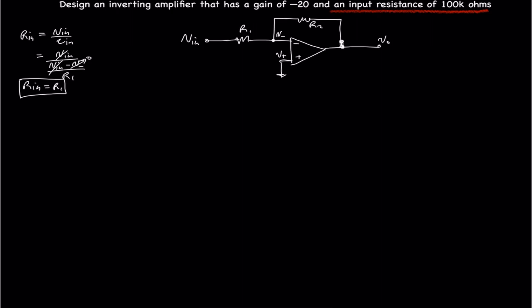So thus, by voltage, you could say by node method or by superposition, you can find V out divided by V in, which is equal to negative R2 divided by R1.